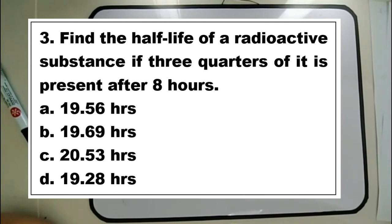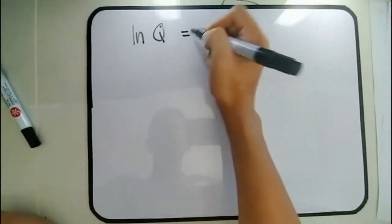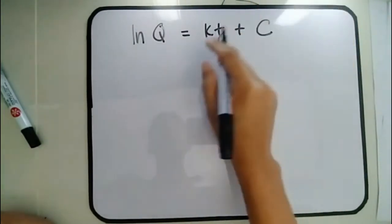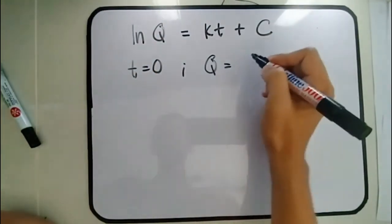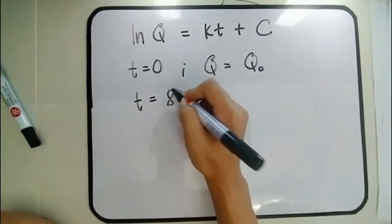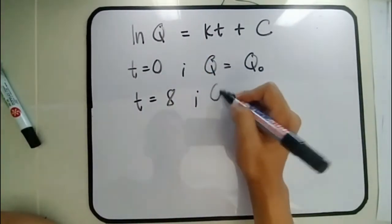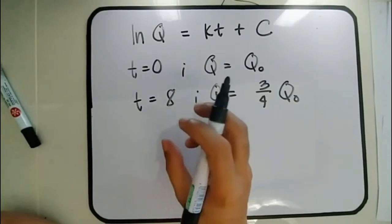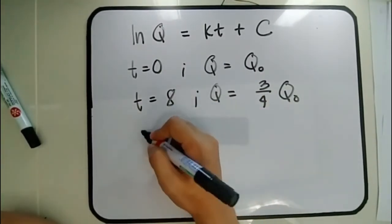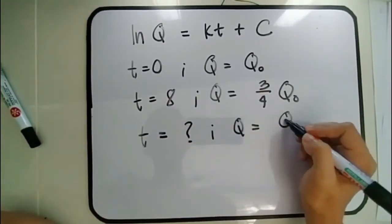Let's solve our last sample problem: find the half-life of a radioactive substance if three-quarters of it is present after 8 hours. Using the same concept, ln Q = KT + C. First condition: at T = 0, Q = Q₀. Second condition: at T = 8 hours, Q = (3/4)Q₀. What we want to find is the time T when Q = Q₀/2, i.e., the half-life.